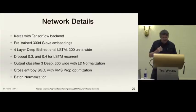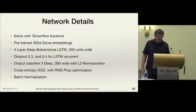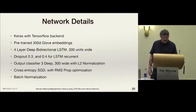The network is constructed with Keras with TensorFlow backend, using pre-trained 300 dimensional glove embeddings, four layer deep bi-directional LSTM, 300 units wide. A dropout of 0.3 and 0.4 for the recurrent connections. The output classifier is 3 deep, 300 wide with L2 norm. We're using cross-entropy SGD with RMS prop optimization and batch normalization.